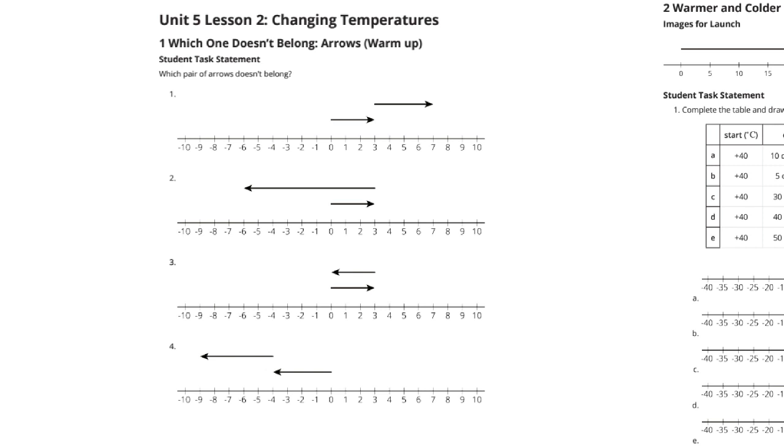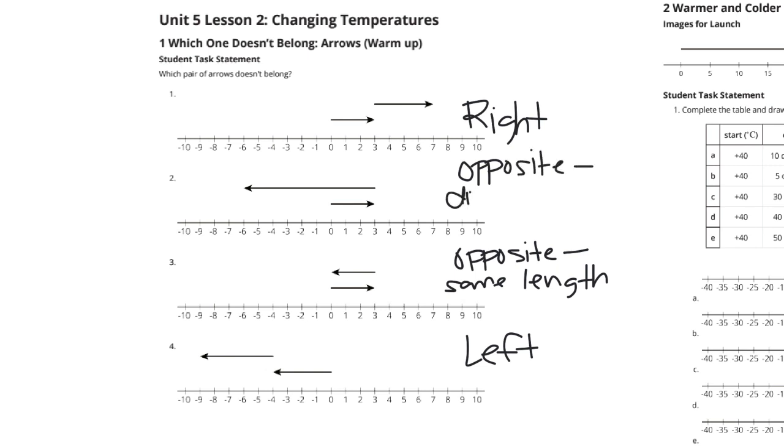For example, in question 1, each of the arrows are pointing to the right, versus number 4, where each of the arrows is pointing to the left. Now we get to 2 and 3, and you have one arrow going left, one arrow going right. In this one, they're opposite but the same length, whereas 2, they're opposite but now they're different lengths. When I say opposite, I meant opposite directions here.